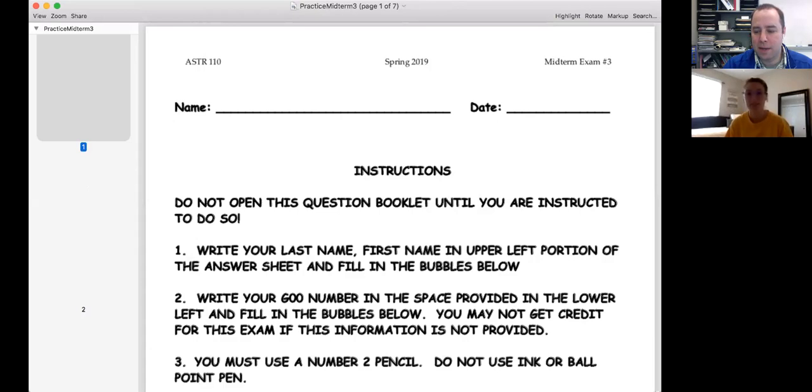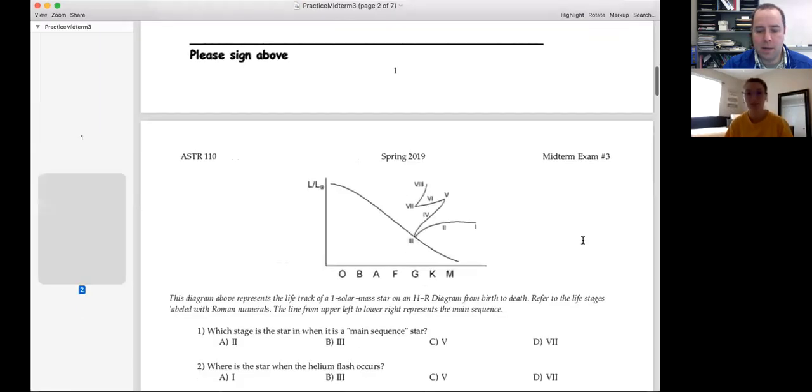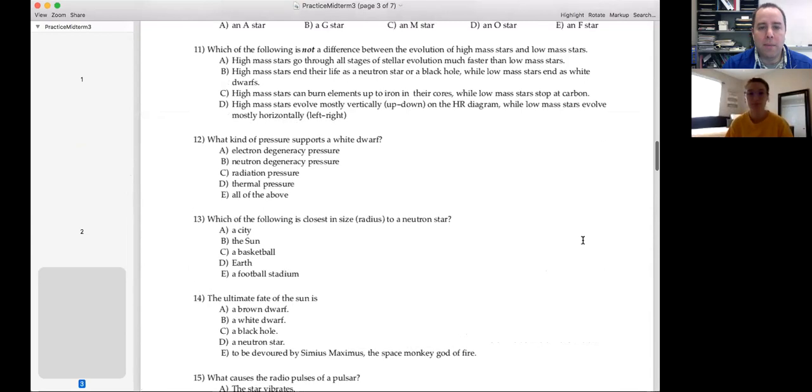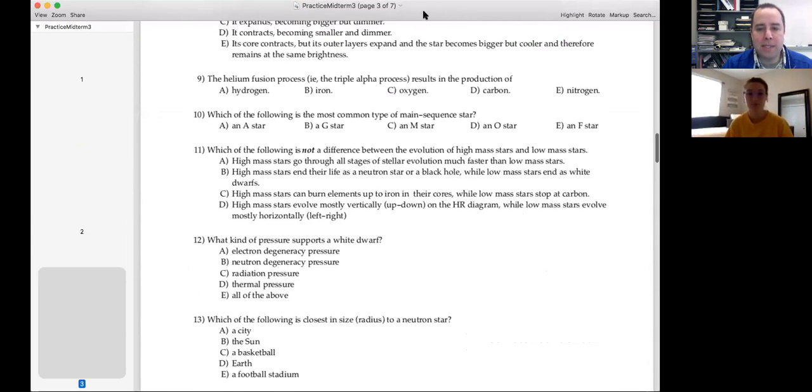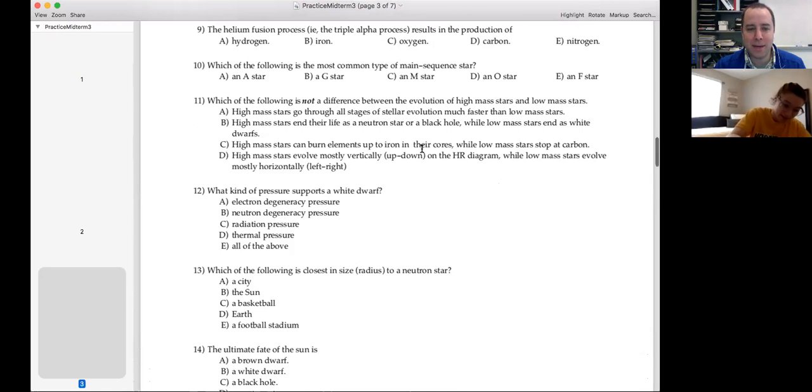You seeing it? Yeah. All right. Number 10, which of the following is the most common type of main sequence star? This is one you sort of just had to remember, but it turns out that the high mass stars, there are fewer of them for two reasons. One is there are fewer of them born and they also live a lot shorter lives. So as you go down in mass, they become more and more common and they live longer and longer. So the lowest mass stars are the most common type and that would be the M stars. Okay, that's what I saw.